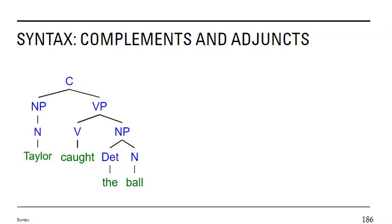Let's look at this sentence, Taylor caught the ball. In this sentence, the verb caught, we think about what is required in order for the verb caught to happen. The verb caught requires both a person who does the catching and what is caught.